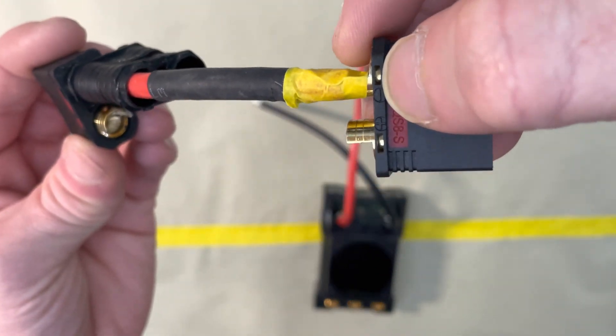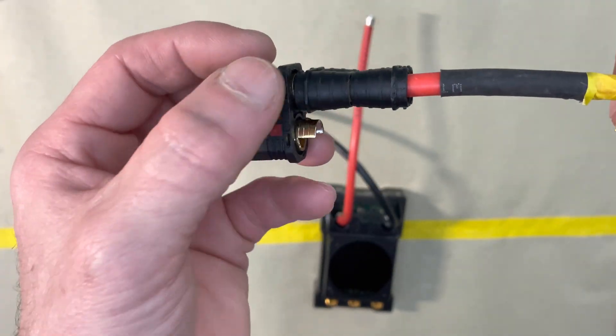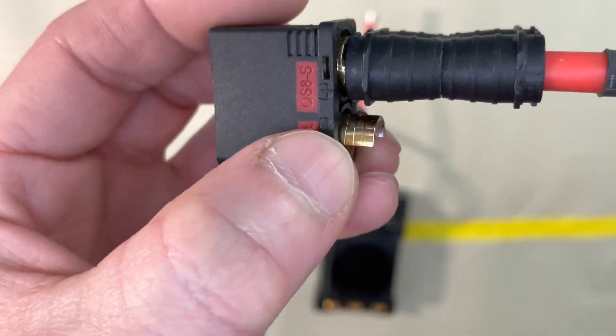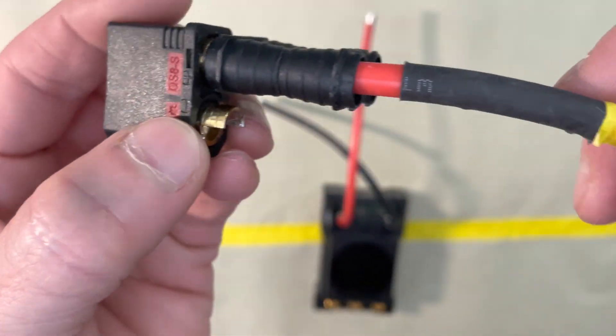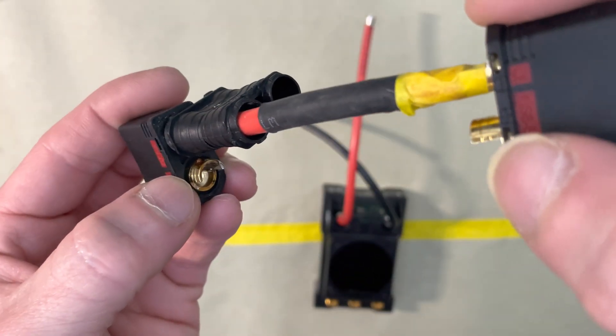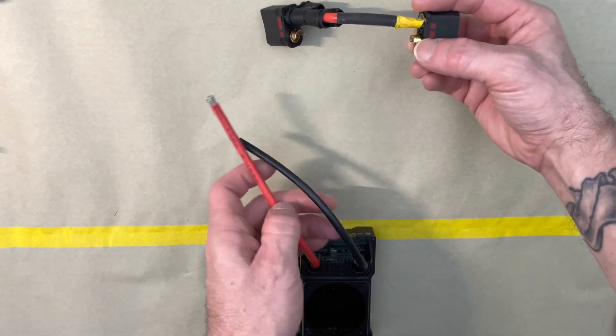Let's see here. This is negative, this is positive, and then this is positive, and this is negative. So we want the negative from the speed control to go here, and the positive from the speed control to go here. Positive on this side, negative here.